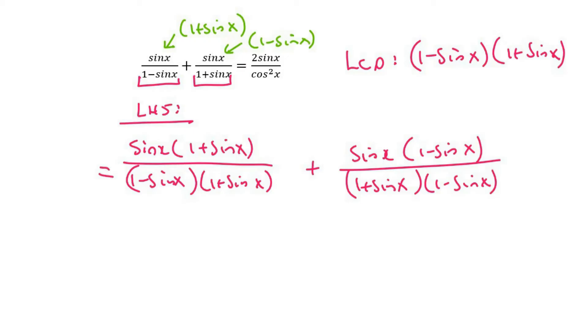So now the denominators are the same and so we can leave it like that. And then at the top we're going to be left with sine x plus sine squared x plus sine x minus sine squared x. You see what I did? The denominators are the same so we can put everything together over one denominator and I just multiplied out the brackets.